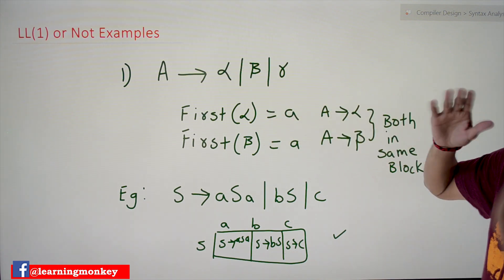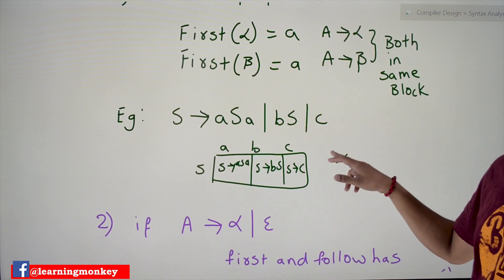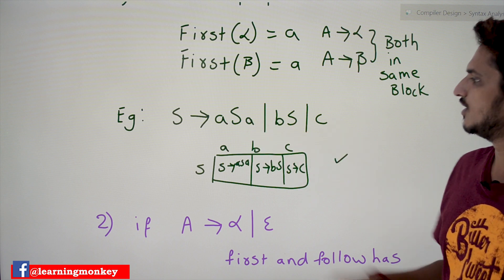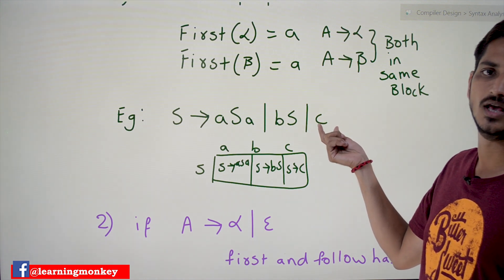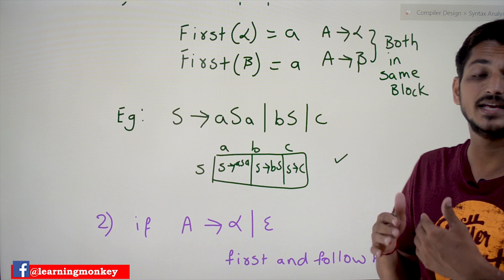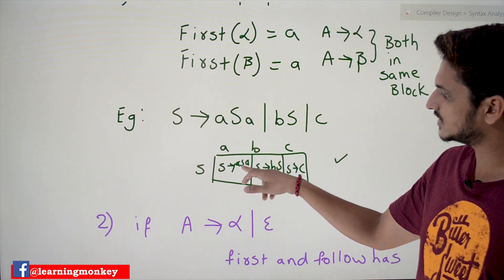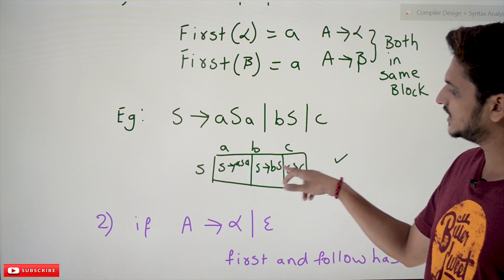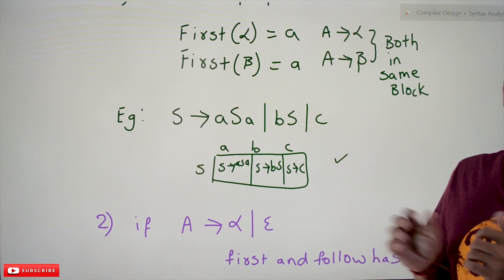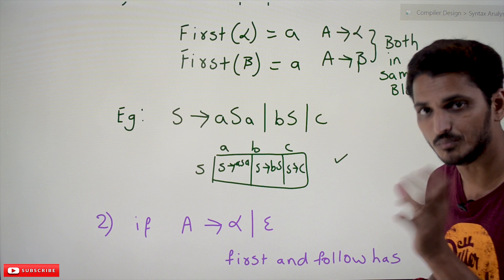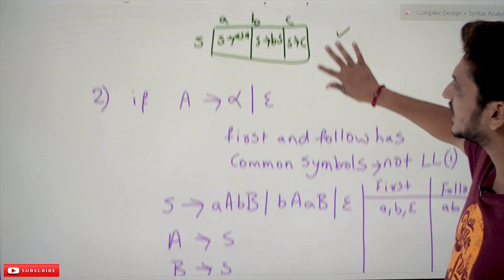So the first condition to check: if productions are of this form, check for same first symbols. Let's take an example: S → aSa | bS | c. What is First(aSa)? It is 'a'. What is First(bS)? It is 'b'. What is First(c)? It is 'c'. Each of α, β, γ has a separate first symbol, so they go into different blocks. This is an LL1 grammar because there is no collision of two productions in the same block.